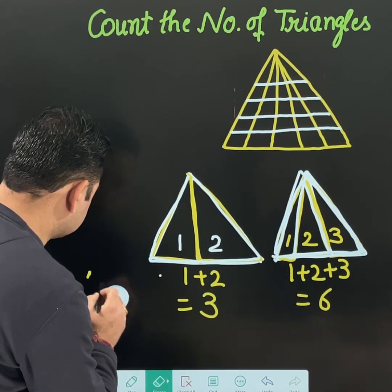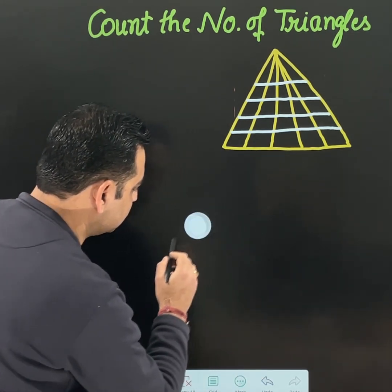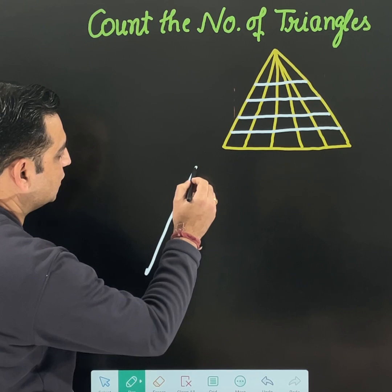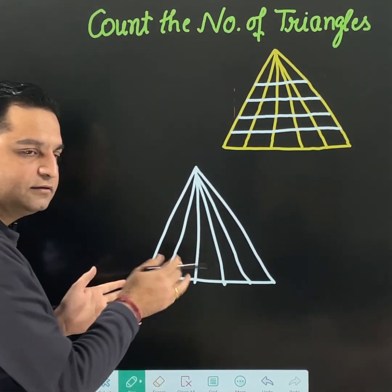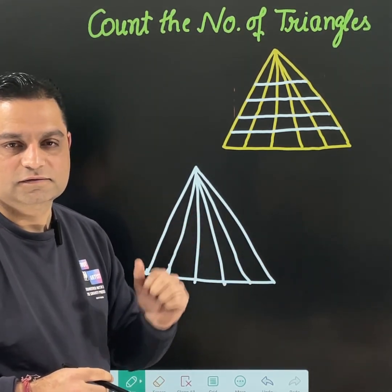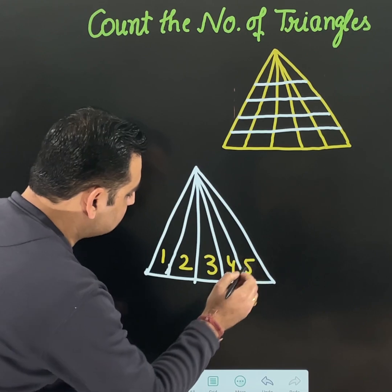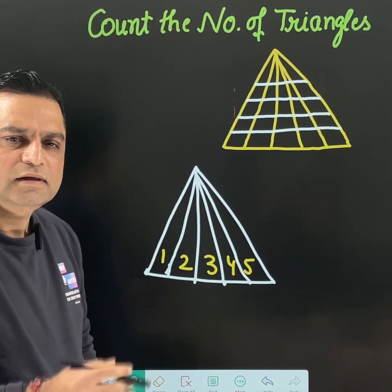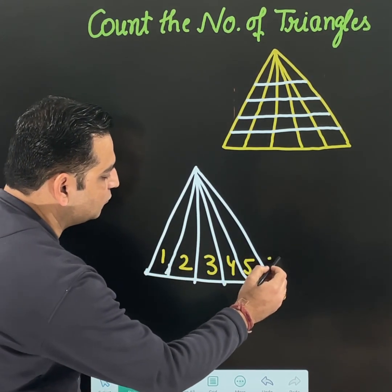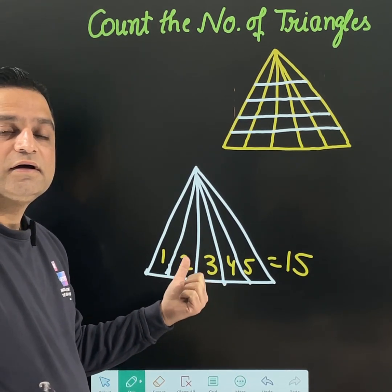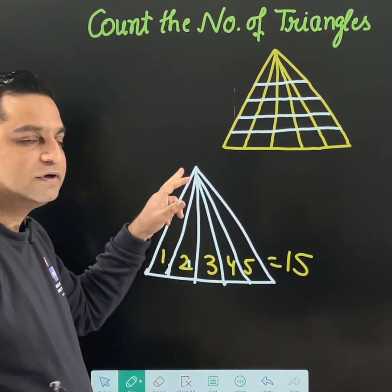Let me give one more question of this type. Suppose you have a triangle with four lines inside. The counting goes from one to five. Just add all of them: 5 plus 4 is 9, plus 3 is 12, plus 2 is 14, plus 1 is 15. That means the total number of triangles are 15. Remember this is the first trick of the day — number of triangles is 15 for these vertical lines.